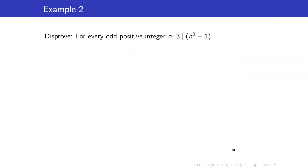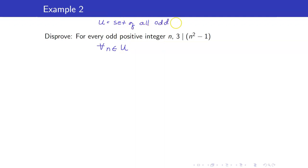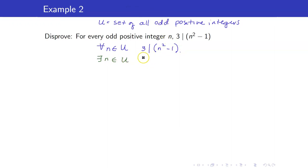Next, for every odd positive integer n, 3 divides the quantity n squared minus 1. Using symbols, this is: for all n in the set of all odd positive integers, 3 divides n squared minus 1. To disprove this, we just have to find a counterexample — find an odd positive integer for which 3 does not divide n squared minus 1.